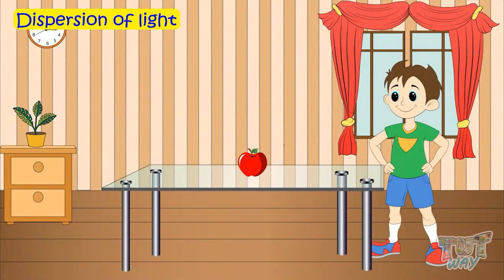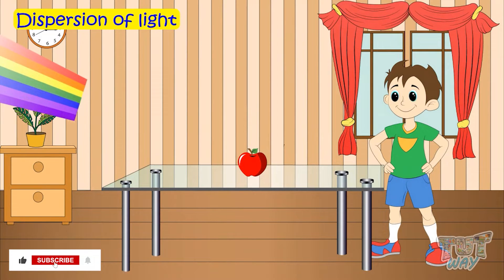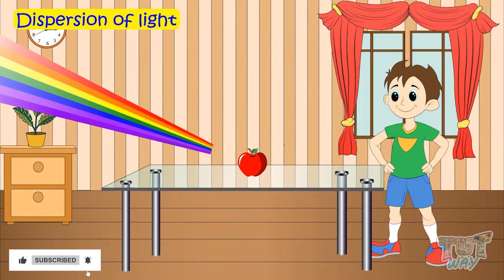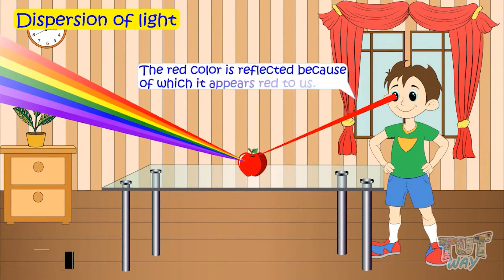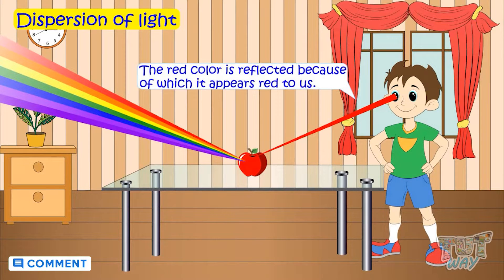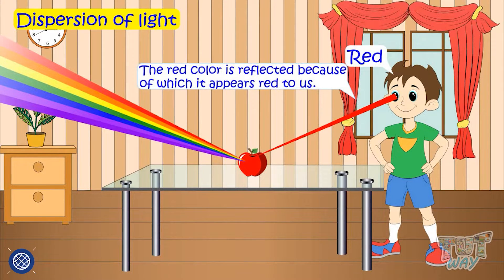Whenever light falls on an object, for instance a red object, all other colors of the light are absorbed by the object and only the red color portion of the light is reflected back. And that is why the object appears red to us.